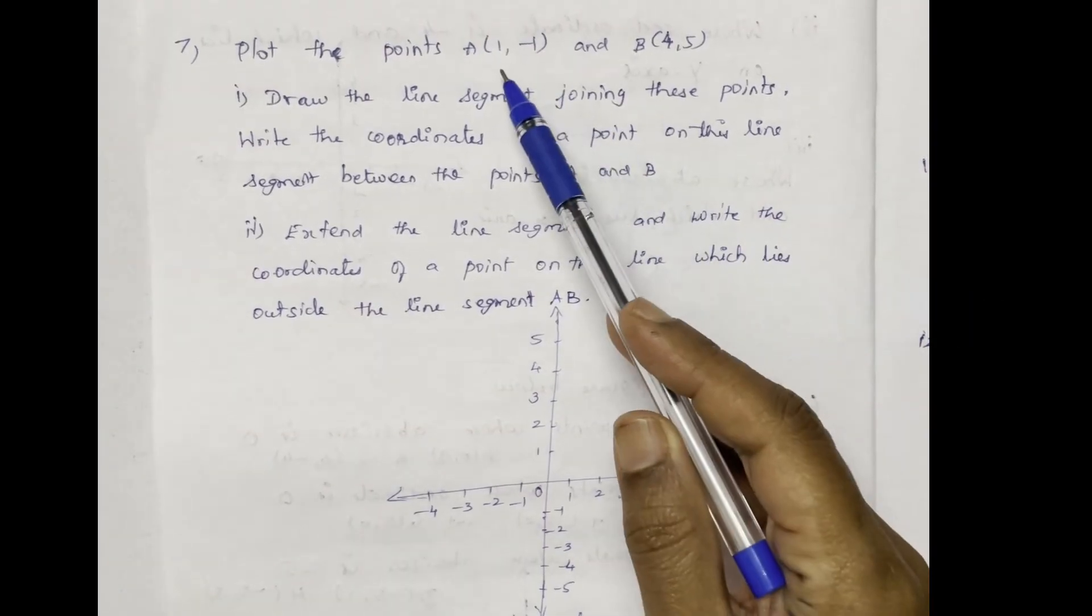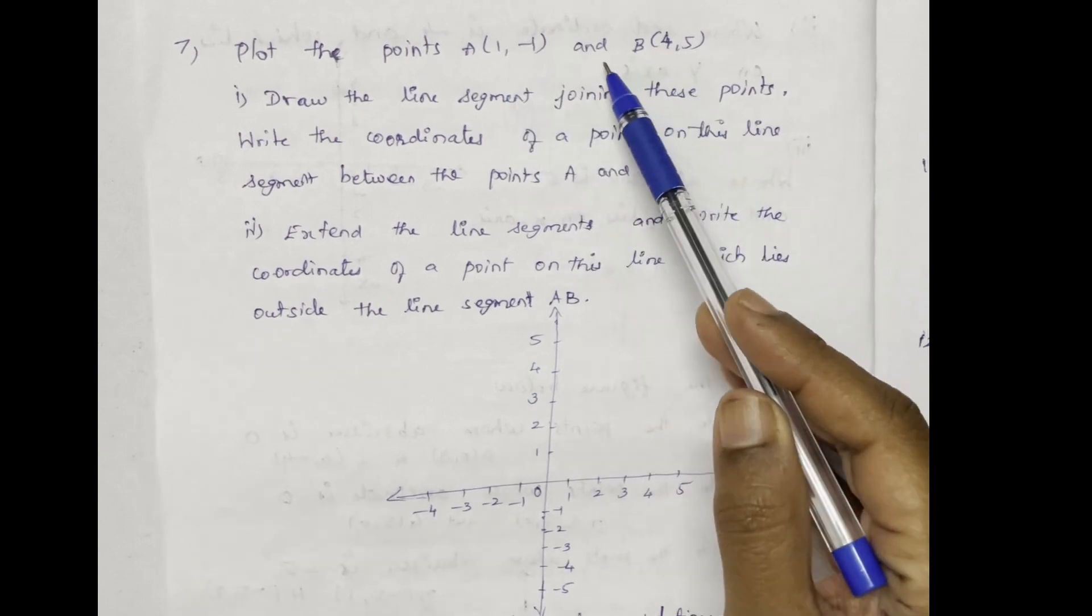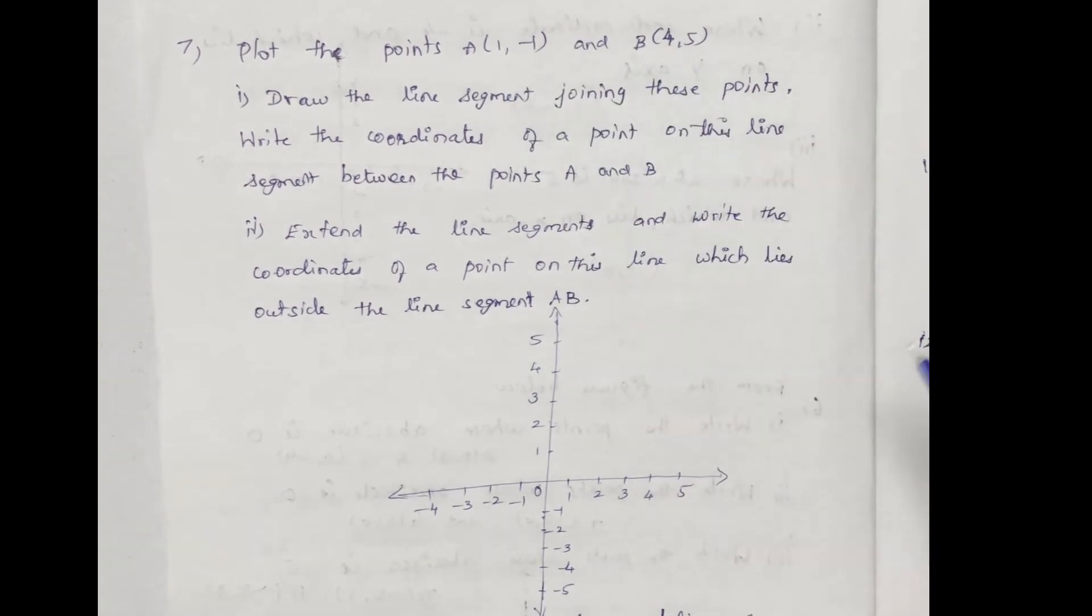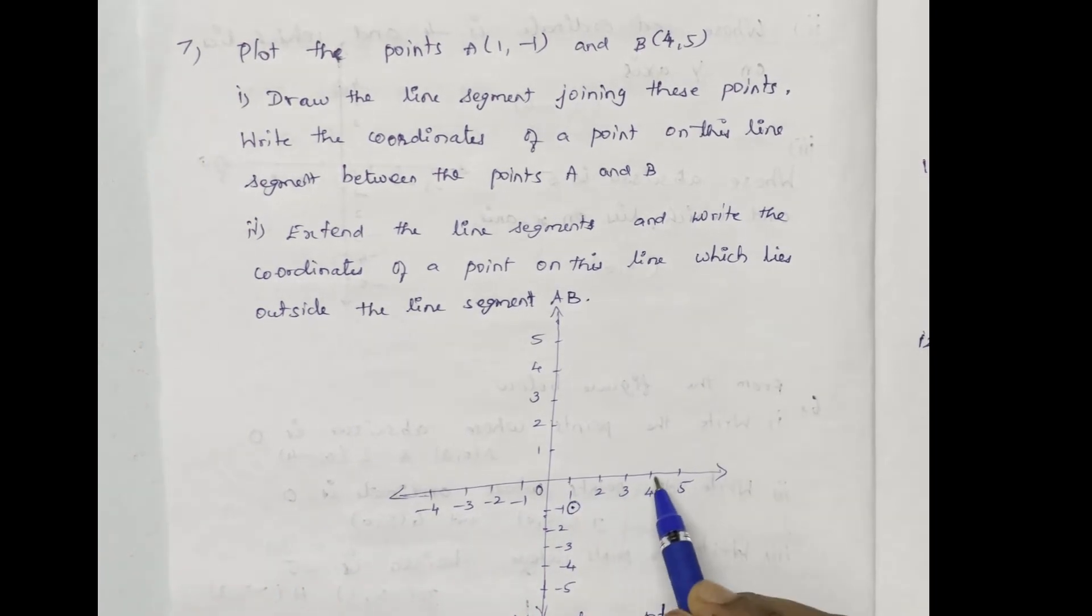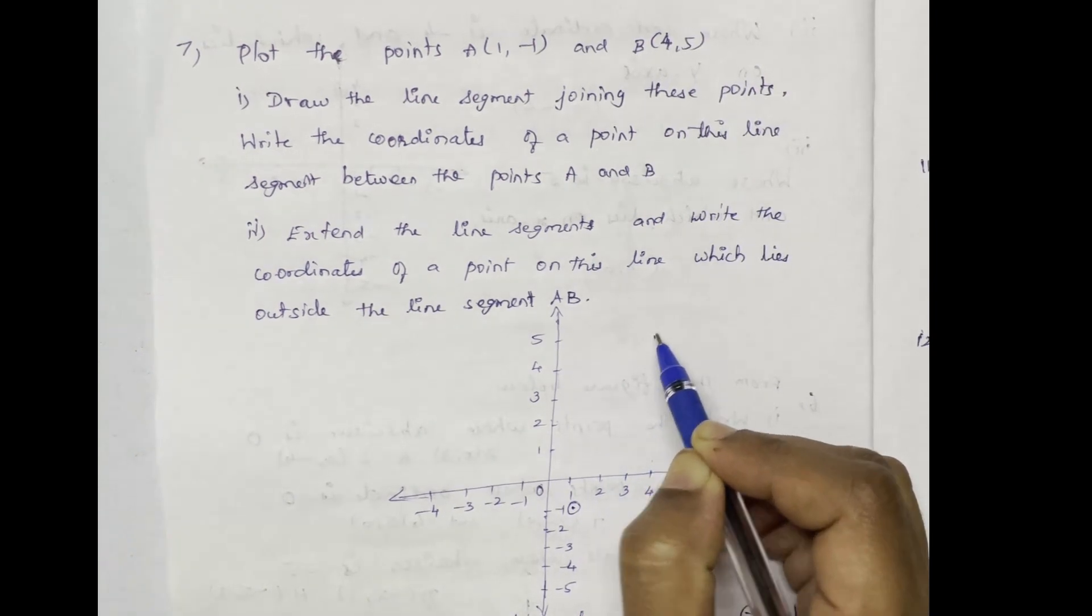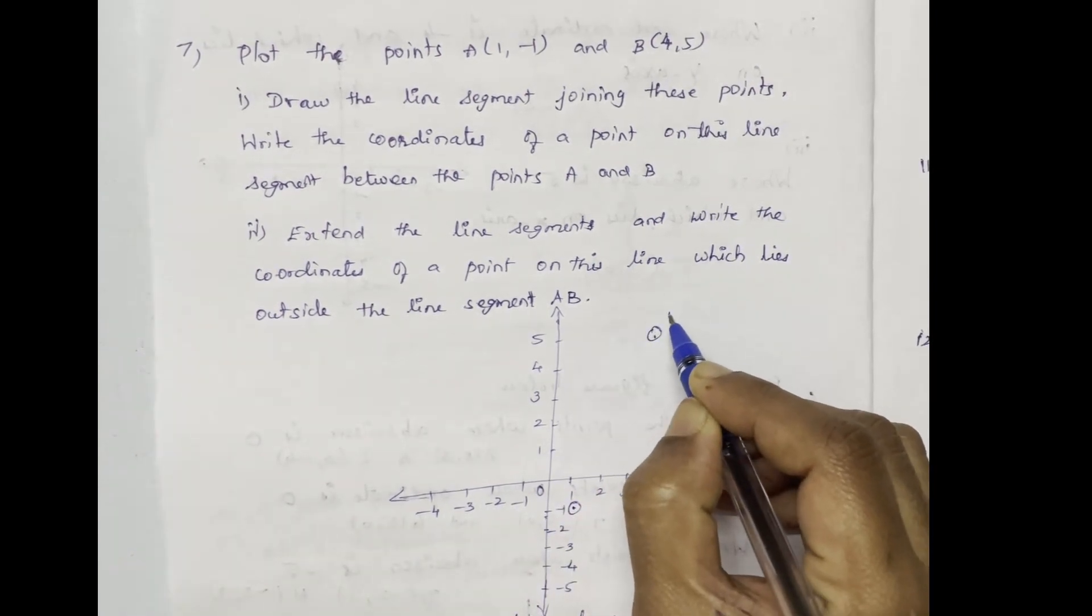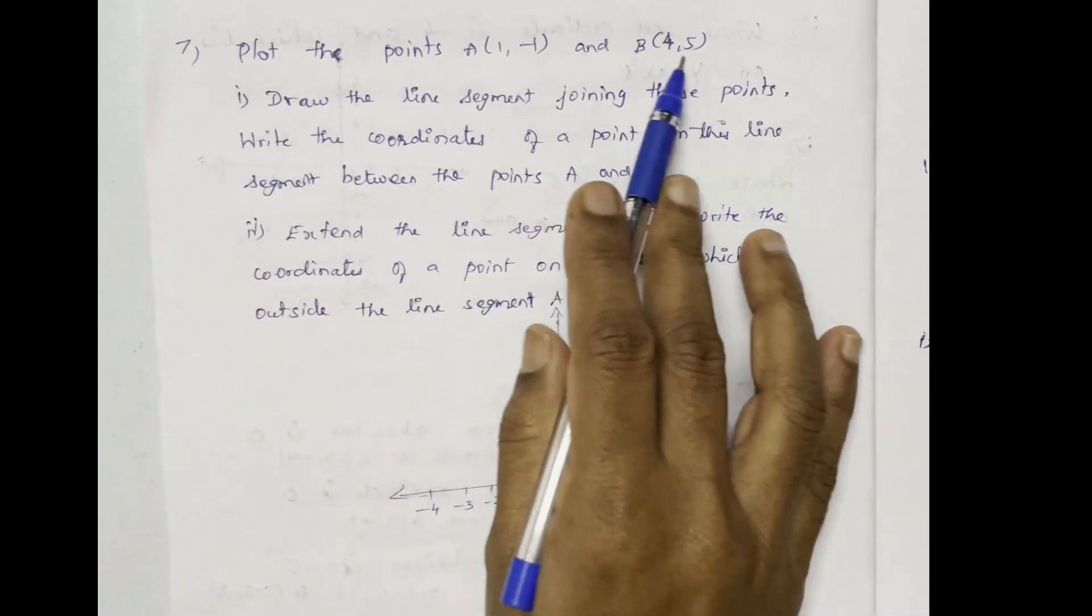Plot the points A of 1, minus 1 and B of 4, 5. Point A is at 1, minus 1 and point B is at 4, 5. This is point B, this is point A. Plot the points.